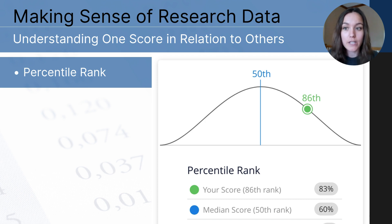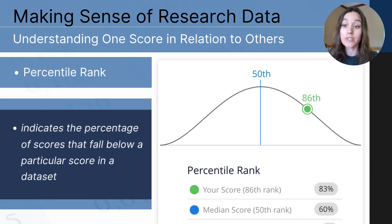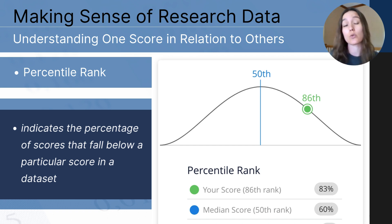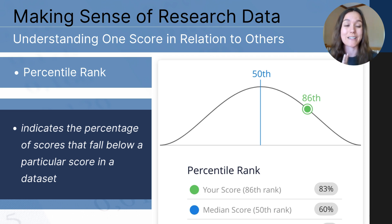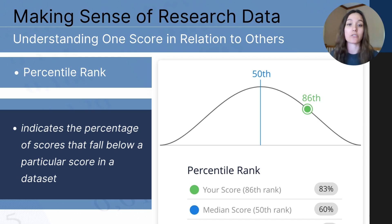Another way we can describe data points is by using percentile rank. Percentile rank is not a measure of central tendency and not a measure of variation. Instead, it's a way to summarize a single data point in relation to the other data points in the distribution. The percentile rank indicates the percentage of scores that fall below a specific score. For example, if a student's score is in the 86th percentile, that student's score is higher than 86% of the other data points in that set.